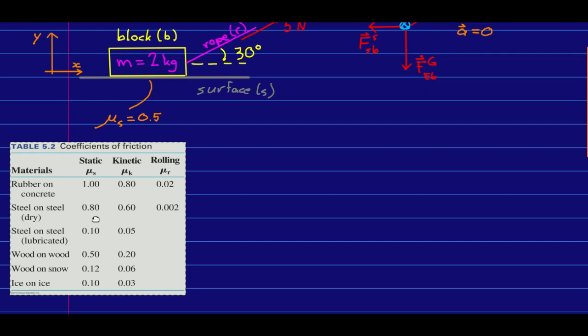Look, a lot of these are given to two significant figures. You know what? That's nonsense. Coefficients of friction are so unreliable, so complicated, that we never know them to two significant figures.